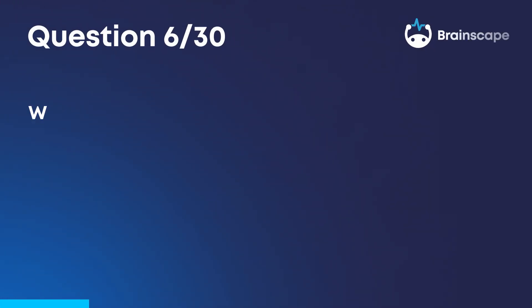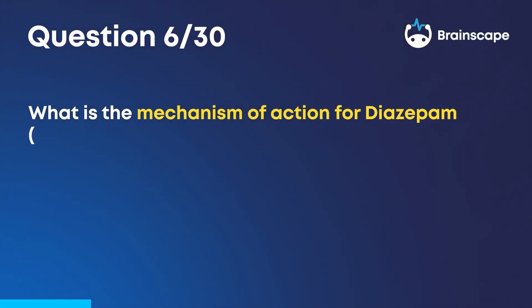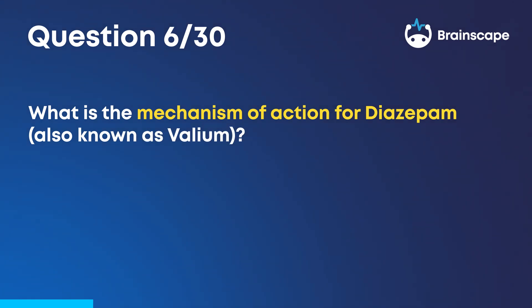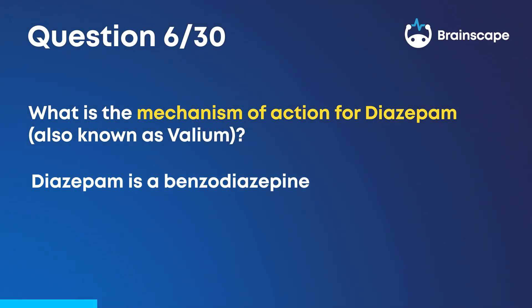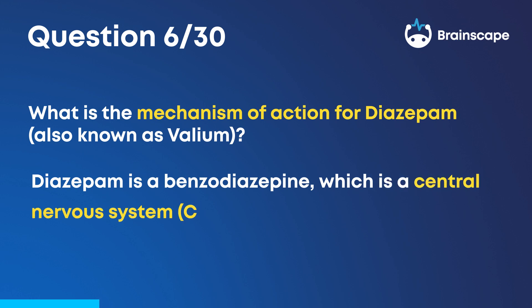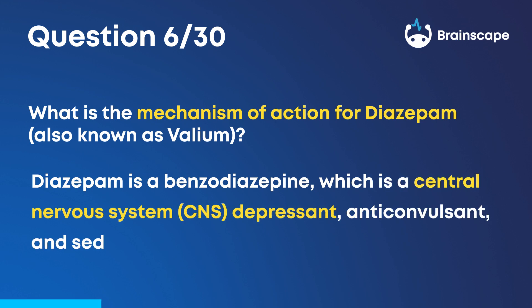Question 6. What is the mechanism of action for diazepam, also known as Valium? Diazepam is a benzodiazepine, which is a central nervous system depressant, anticonvulsant, and sedative.